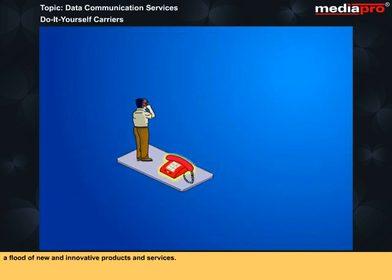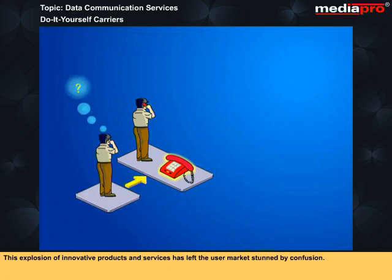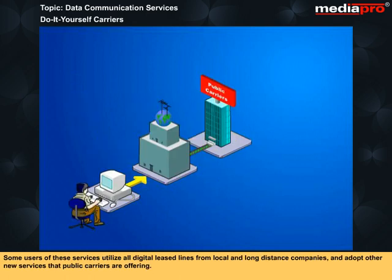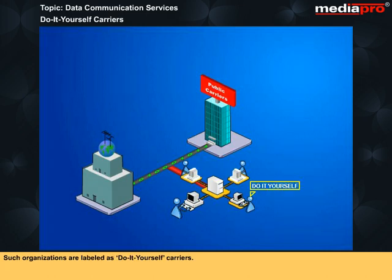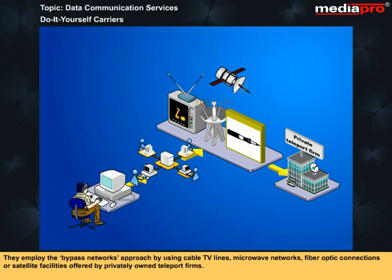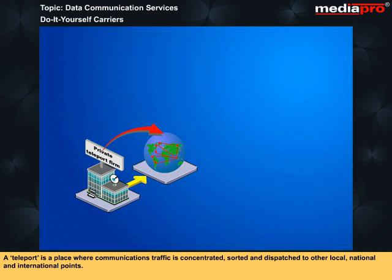A flood of new and innovative products and services left the user market stunned by confusion. Some users utilize all-digital leased lines from local and long-distance companies. Other users bypass the public network facilities of traditional local or long-distance systems and establish their own private networks. Such organizations are labeled as do-it-yourself carriers. They employ the bypass networks approach by using cable TV lines, microwave networks, fiber-optic connections, or satellite facilities offered by privately-owned teleport firms. A teleport is a place where communications traffic is concentrated, sorted, and dispatched to other local, national, and international points.